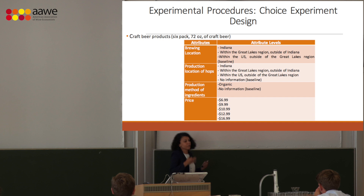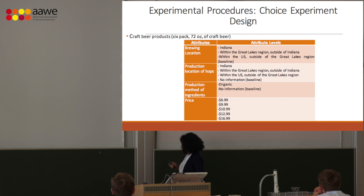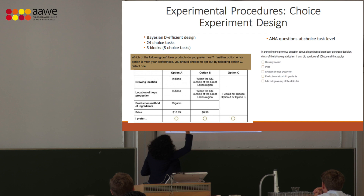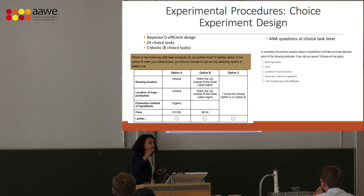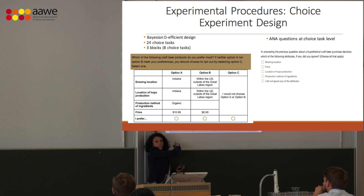The attributes included: brewing location, production location of hops, production method of ingredients (organic or not), and price. Using a Bayesian efficient design, we allocated all these attributes and attribute levels into a set of 44 choice tasks, divided into three blocks of eight choices each. That means each respondent saw eight choices like this trade-off.